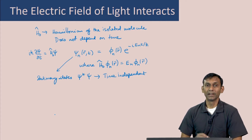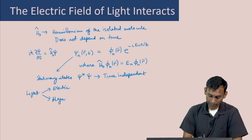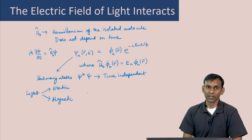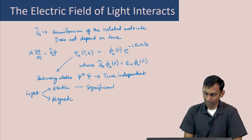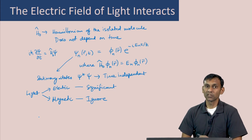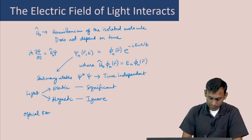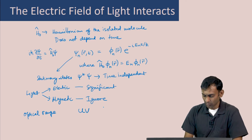Consider this molecule interacting with light. Light has an electric field and a magnetic field associated with it. The interaction of the molecule with the electric field is most significant. We will only consider this interaction and ignore the interaction with the magnetic field, because that is relatively less significant compared to the interaction with the electric field.